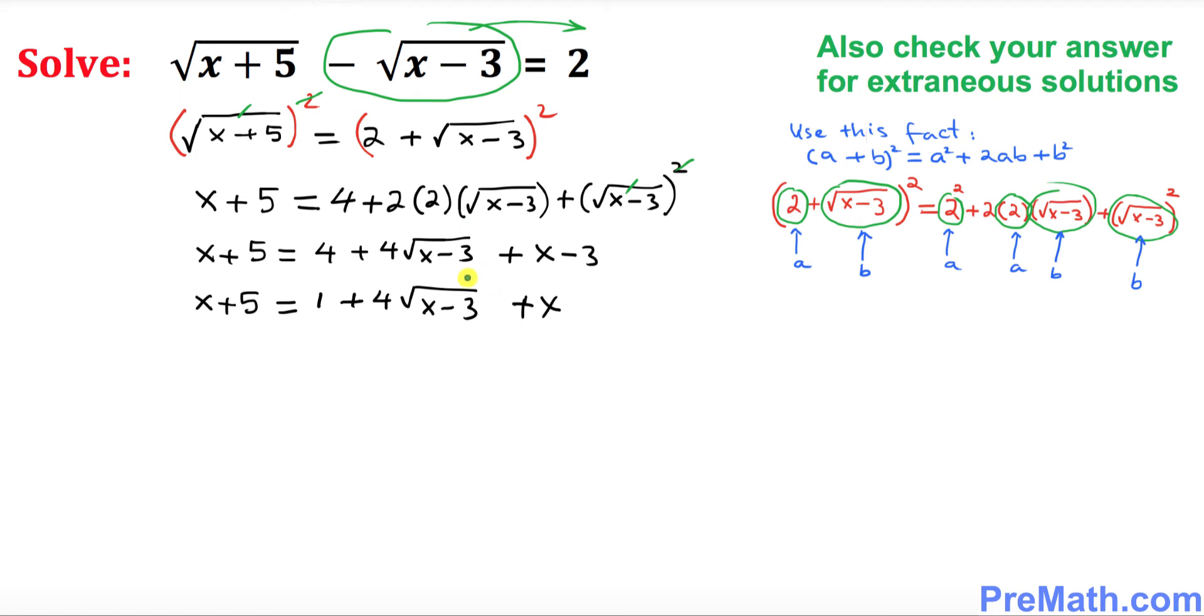Now we want to isolate this square root part. So in order to do that I want you to move this 1 on the left hand side and this x on the left hand side as well. So what is going to happen we already have x plus 5 on the left hand side when you move this 1 on the other side becomes negative 1 and this positive x when you move it on the other side becomes negative x and on the right hand side we are left with 4 times square root of x minus 3. So far so good.